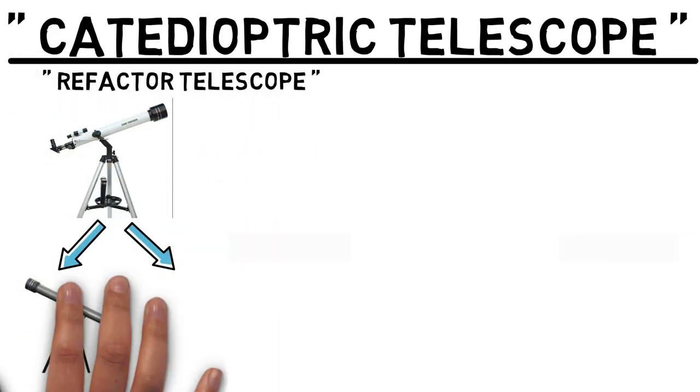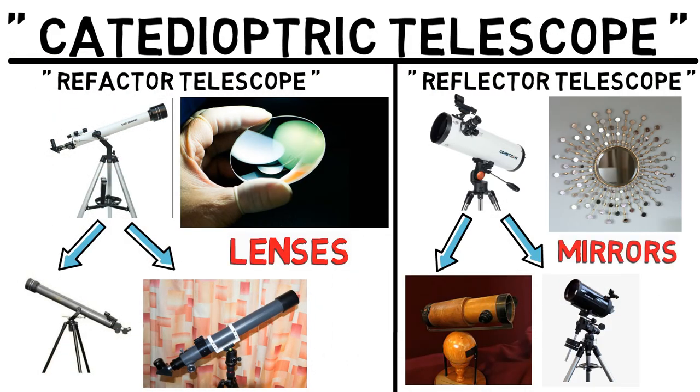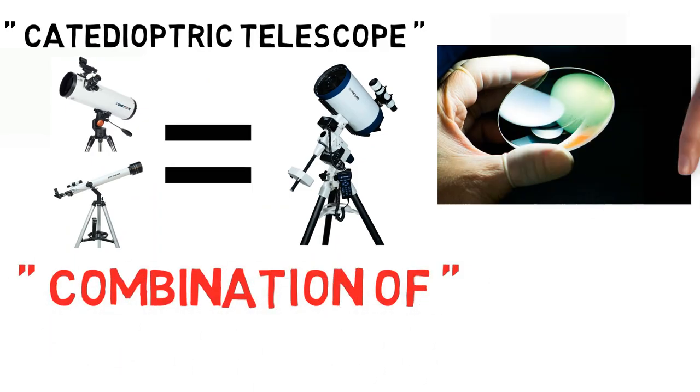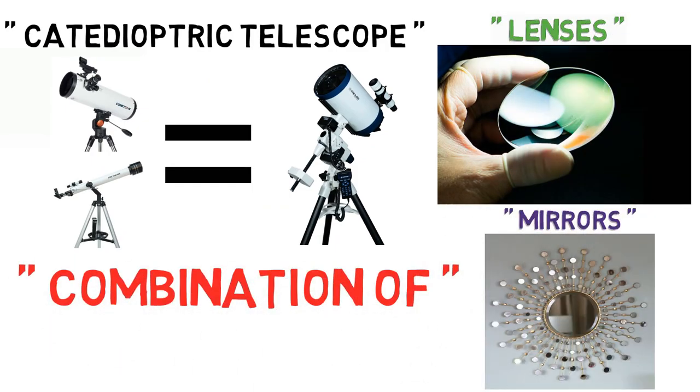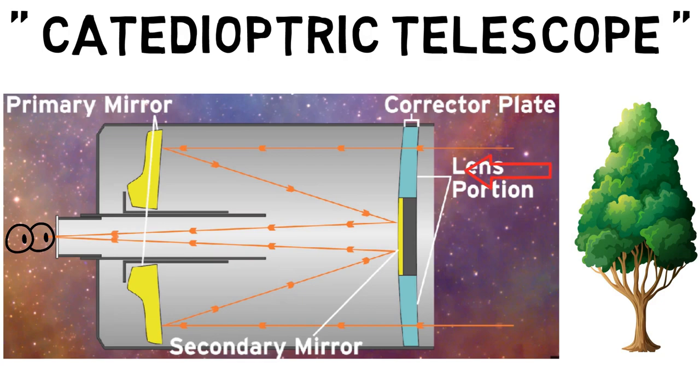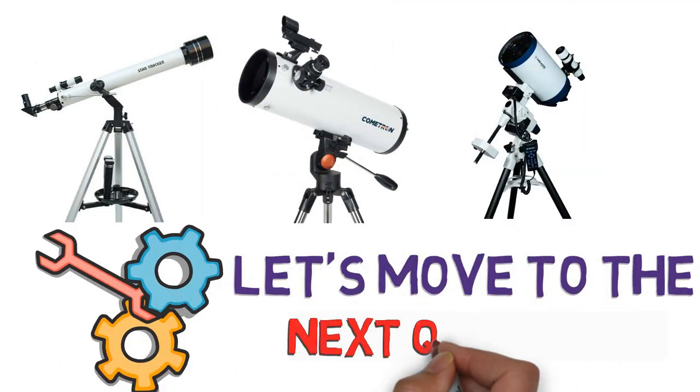Catadioptric telescope. You might have observed that refractor telescopes use lenses and reflector telescopes use mirrors to magnify images. But catadioptric telescopes use the combination - it uses both lenses and mirrors to magnify the image. Here's how it works. In the image, as you can see, the rays from the outside first pass through the corrector plate, and then the primary mirror or objective reflects or directs the rays towards the secondary mirror held at the center of the corrector plate. Then the secondary mirror again reflects or directs the rays towards the aperture, from which it reaches the eyepiece.